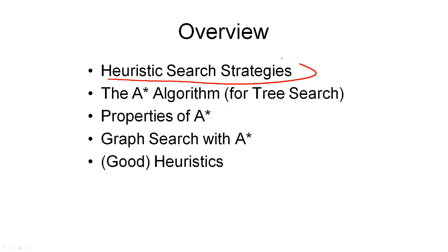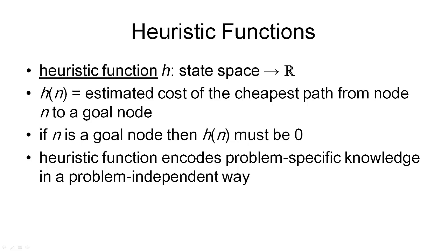We will now look at heuristic search strategies, which use information about the states on the fringe to determine which node to explore next. Information about a state that can be used in a search strategy can be encoded using a heuristic function. In general, a heuristic function h maps a node in the search space to a real number, encoding the estimated cost of the cheapest path from the given node to a goal node.